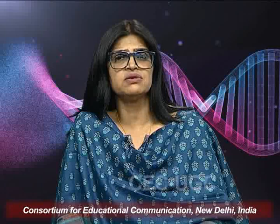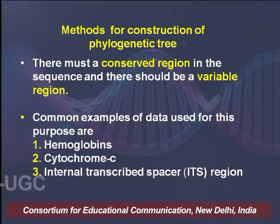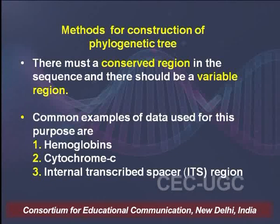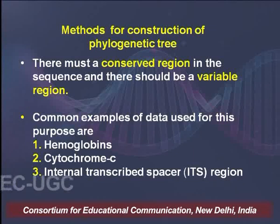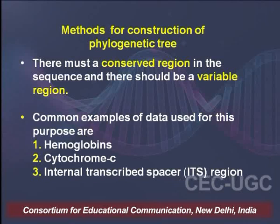For building a phylogenetic tree, the sequence we decide on must have a conserved region and also a variable region. Common examples of data used for this purpose are hemoglobin, cytochrome c, and the ITS region — the internal transcribed spacer region — which is very often used for building phylogenetic trees.